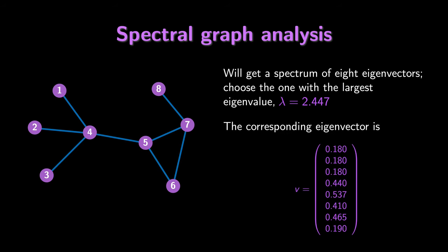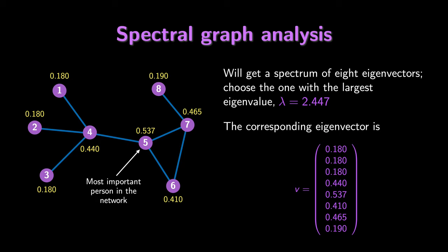The corresponding eigenvector for this case is shown, and we can transfer these numbers onto the graph. Nodes 1, 2, and 3 have low components in our eigenvector, meaning these people are less important in the network since they only have one connection to someone else. The most important people in the network are 4, 5, and 7. In particular, person 5 is the most important. Even though person 5 only has 3 connections, they are more important than person 4 because their 3 connections are all to other important people, whereas person 4 has several connections to the less important people 1, 2, and 3.